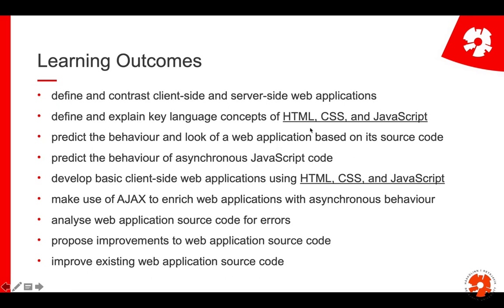So, looking at a web application based on HTML, CSS, and JavaScript, you should be able to tell how it should behave, how it should look, and how asynchronous JavaScript behaves — which is a bit more complicated. And then use Ajax to actually add asynchronous behavior to websites. Finally, there are three more analytical learning outcomes which look at analyzing source code and proposing improvements or improving existing web application code.